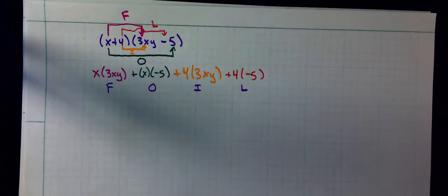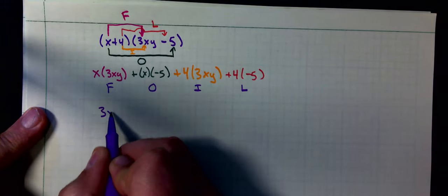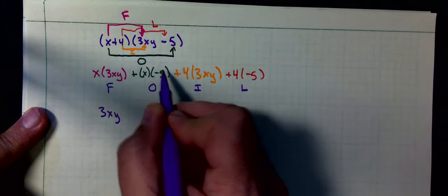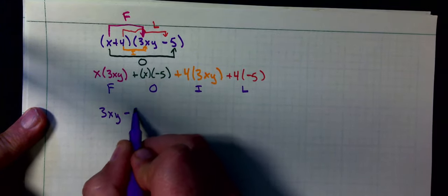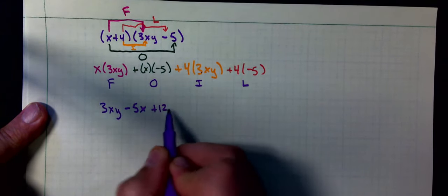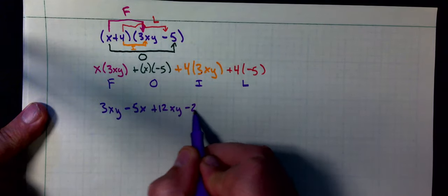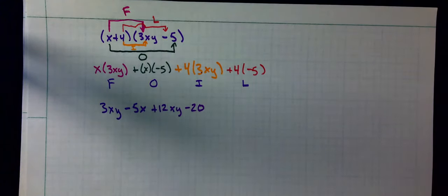Now let's do the multiplications. 3xy times x is 3x squared y, minus 5x, 4 times 3 is 12xy, minus 20.